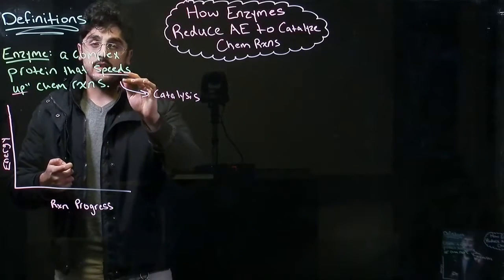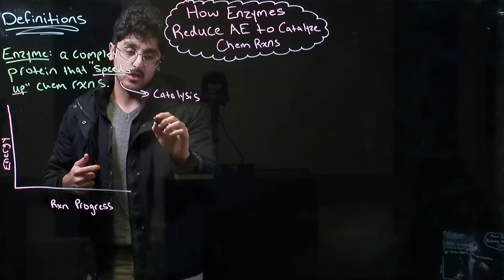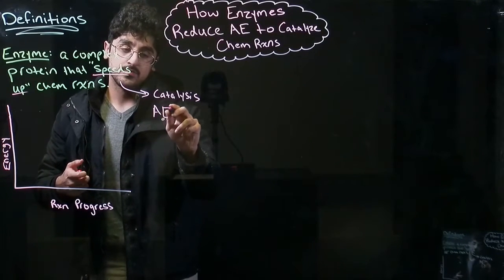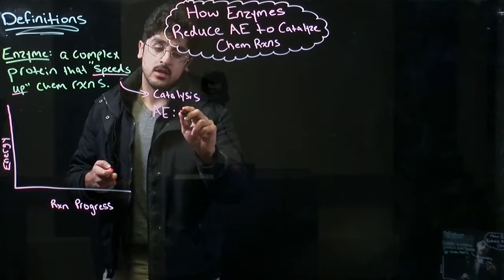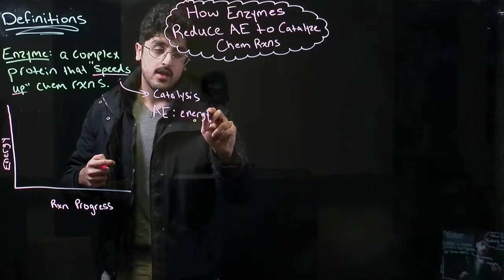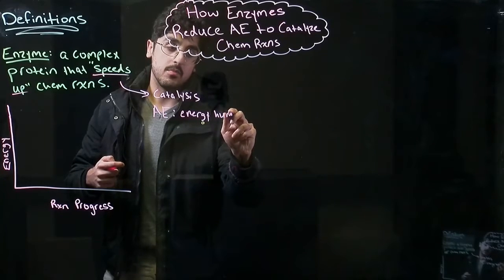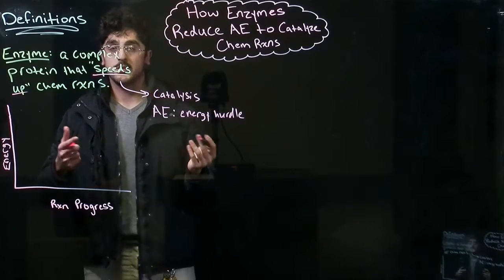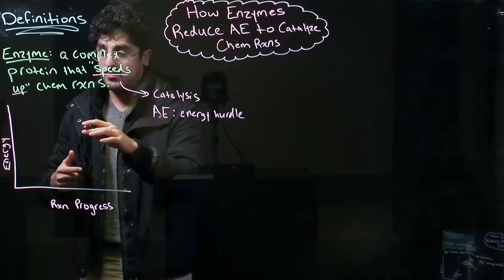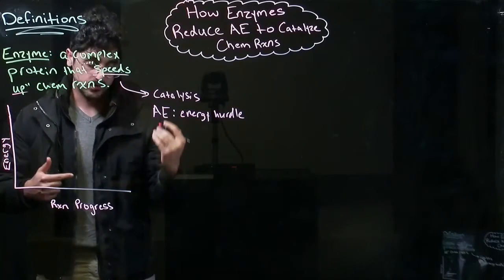So when an enzyme speeds up a chemical reaction, it does this by lowering something called activation energy. Activation energy is like an energy hurdle that the reaction must cross in order to take place. So the enzyme is lowering this activation energy in order for the reaction to take place.